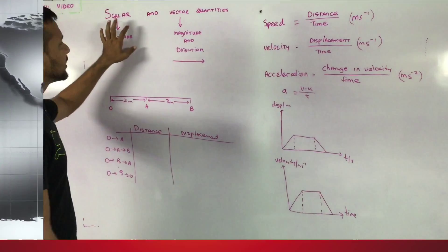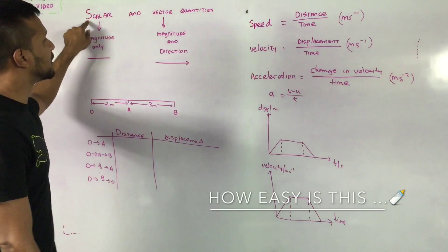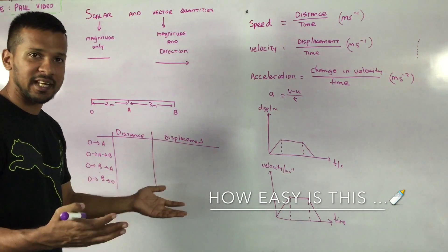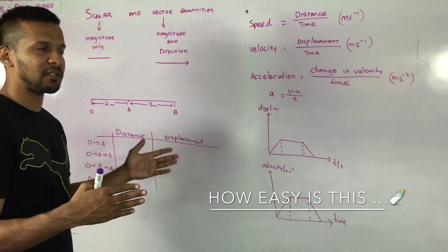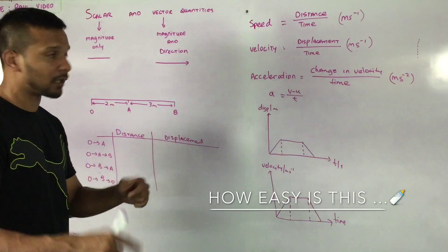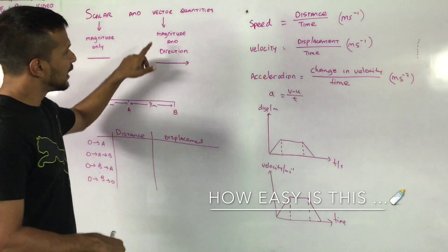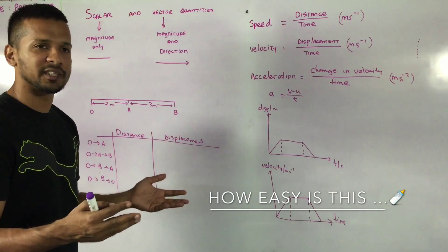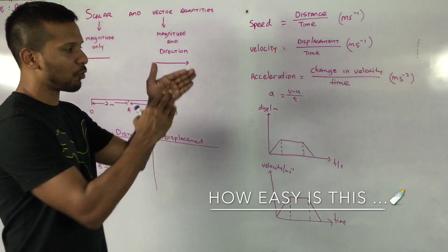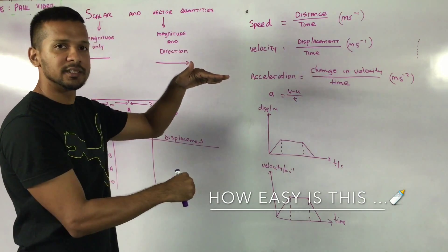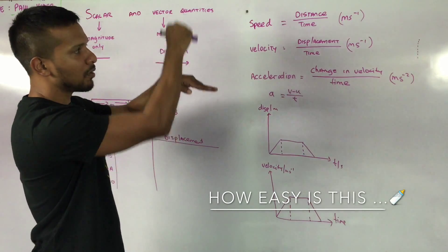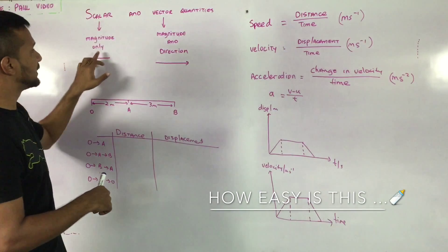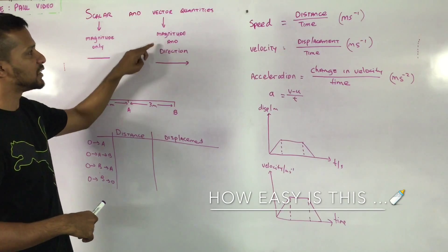The first thing we should note is what is a scalar versus a vector quantity. A scalar quantity is a quantity that has magnitude only. For example, if you wanted to find the time to go from one point to the next, you simply say that's two minutes — direction doesn't matter. A vector quantity, on the other hand, has magnitude and direction. For example, a force: I would say I'm applying a force of two Newtons downwards, or two Newtons upwards. The main difference is that a scalar has magnitude only, while a vector has magnitude and direction.